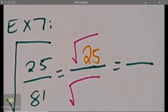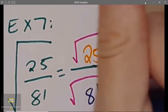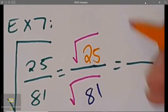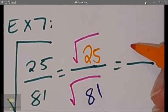So, I'm going to square root the numerator, 25, and the denominator, which is 81. What's the square root of 25? What times what gives you 25? Indeed, that would be a 5.